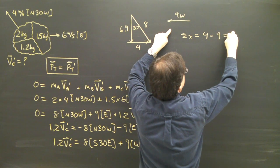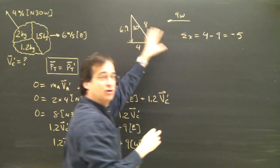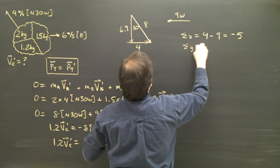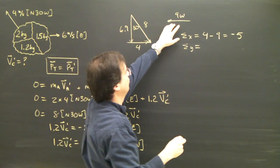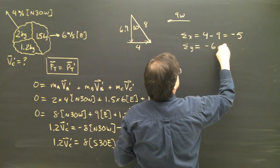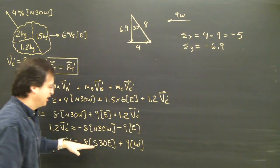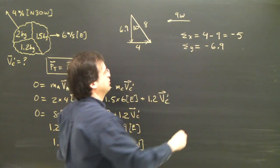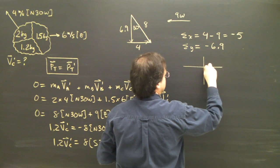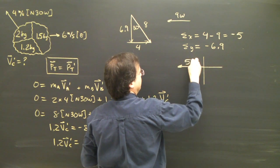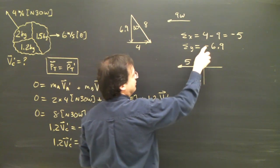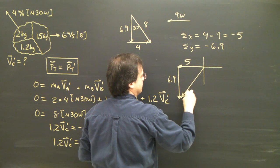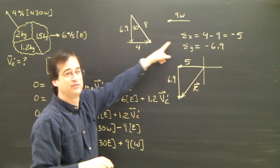The x direction total is 4 positive minus 9, because that's negative, which gives me negative 5. So the total of these vectors in the x direction is negative 5. In the y direction, I've only got one vector — this has no y component — so it's negative 6.9 downward. I break them into components, find the total in x and total in y, and then put them back together. So in x it's 5 to the left, and 6.9 down. There is my resultant of these two vectors added up.